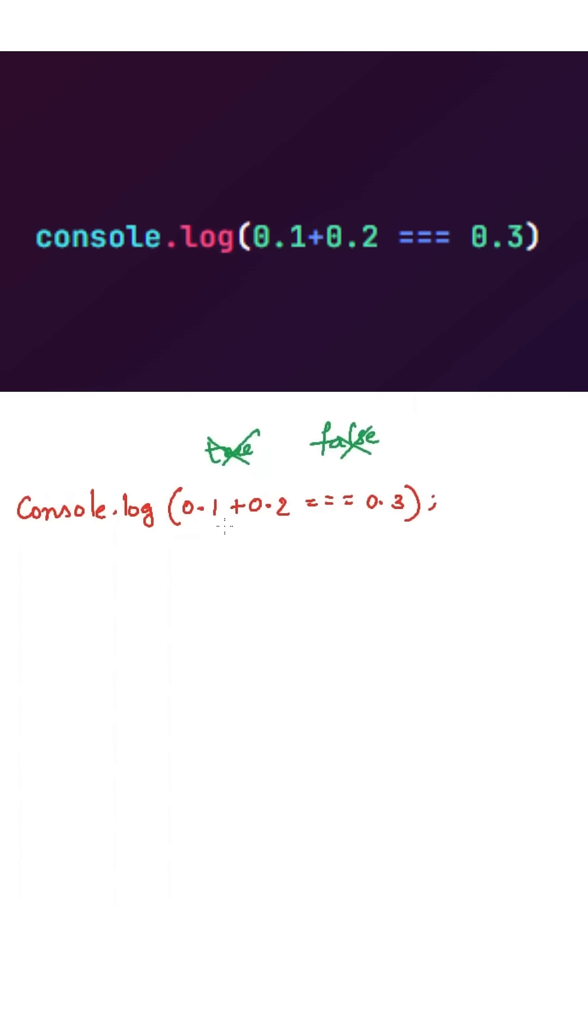This is because here we are using strictly equal to operator between the floating point values. When we are adding the floating point values, in this case 0.1 plus 0.2, you will think that it is 0.3, but it's not. This is tiny bit more than 0.3. It can be approx 0.00000000003. So which will be tiny bit more than 0.3.